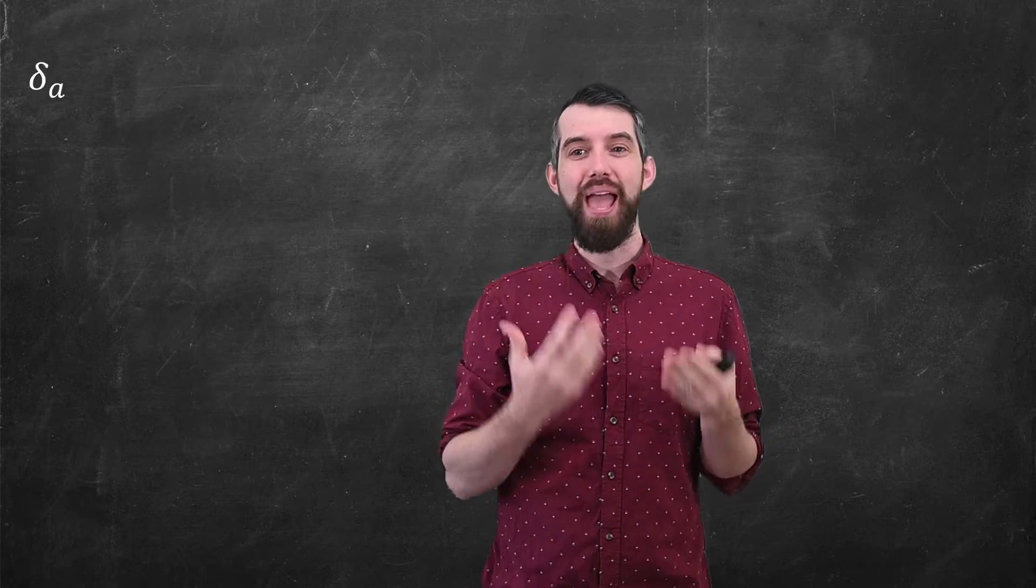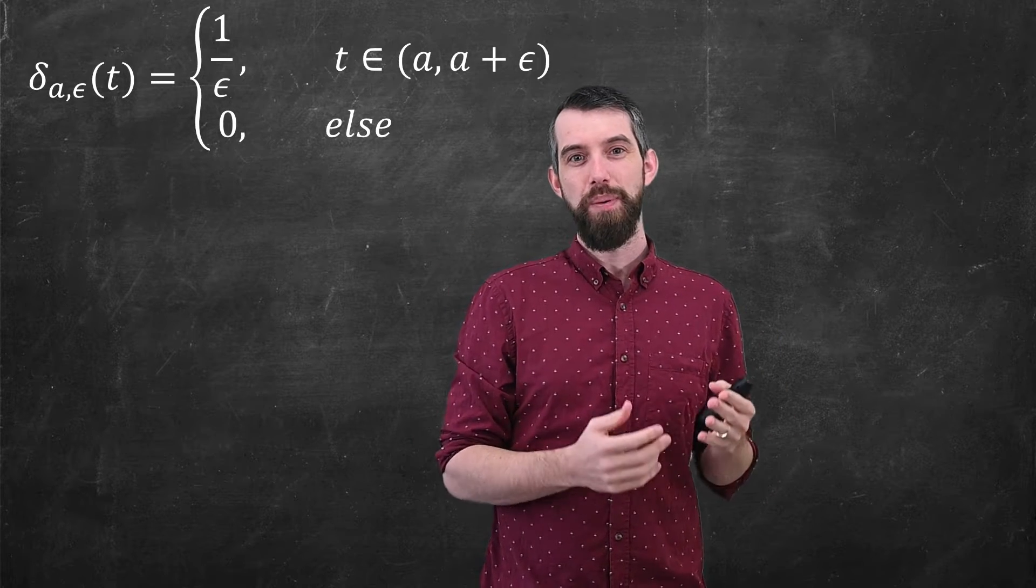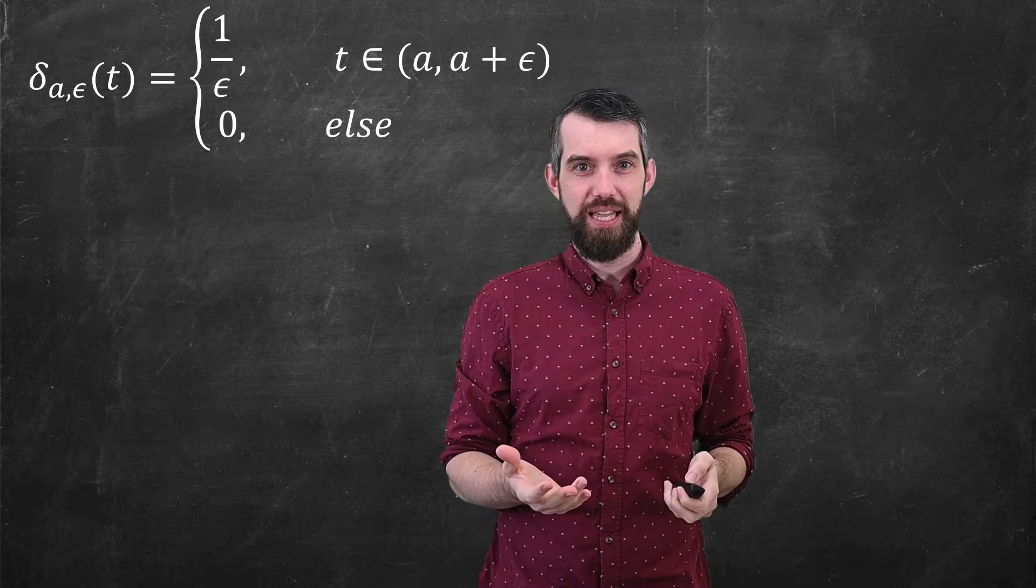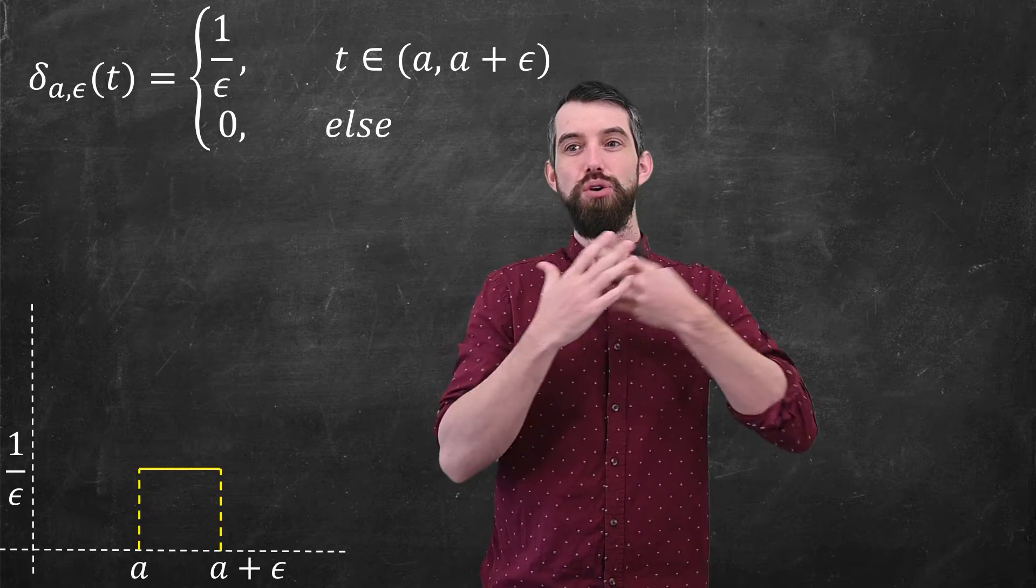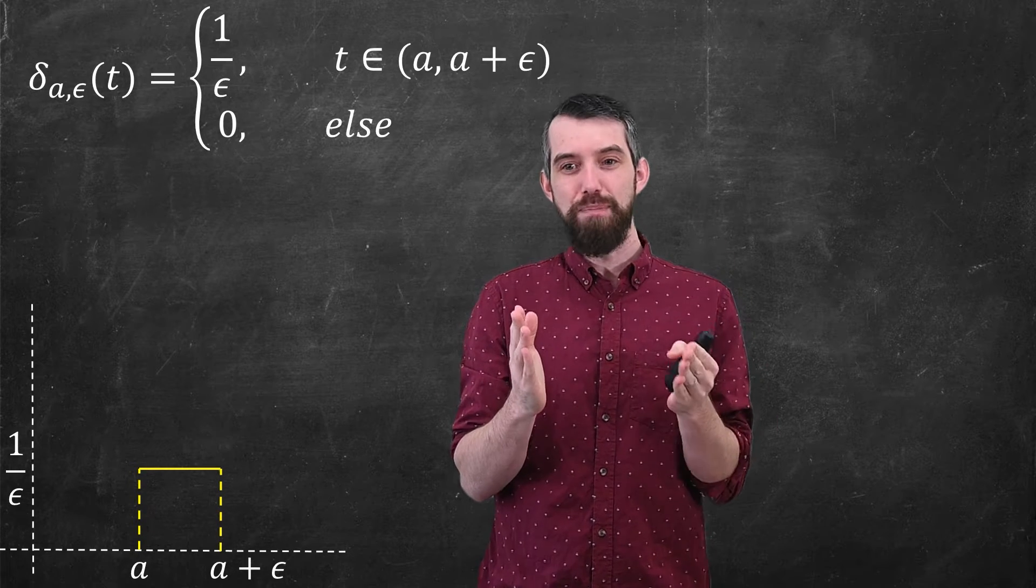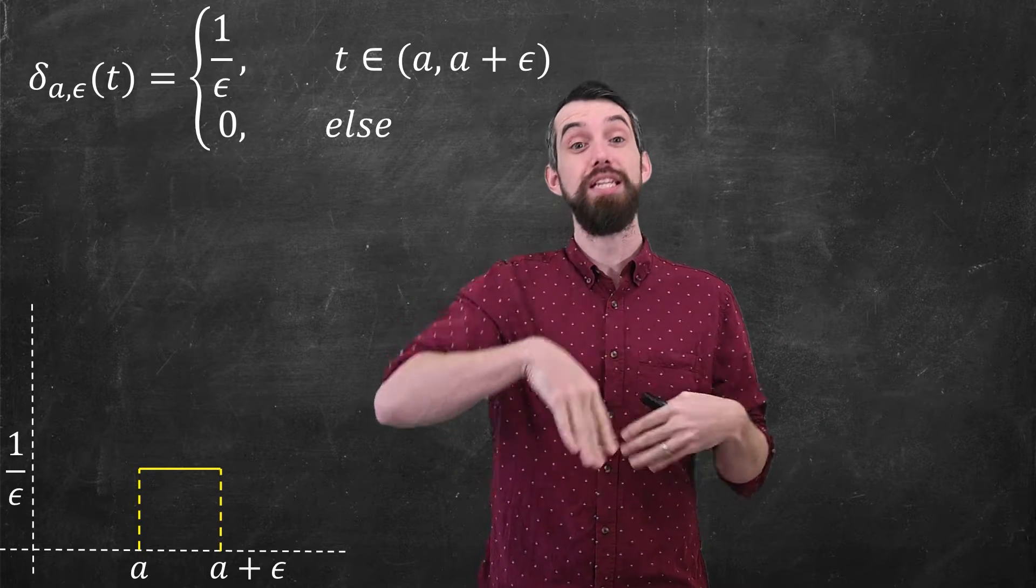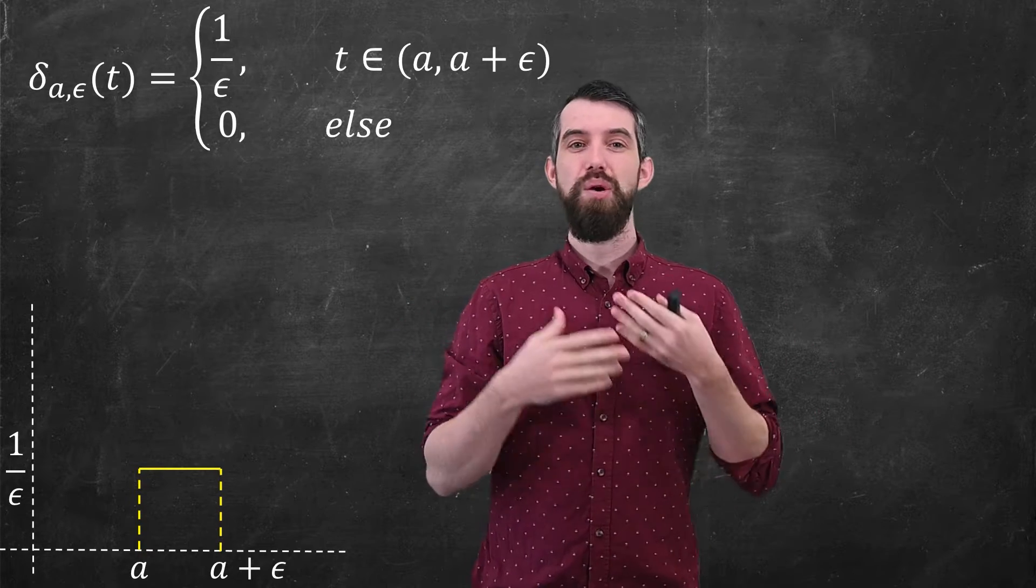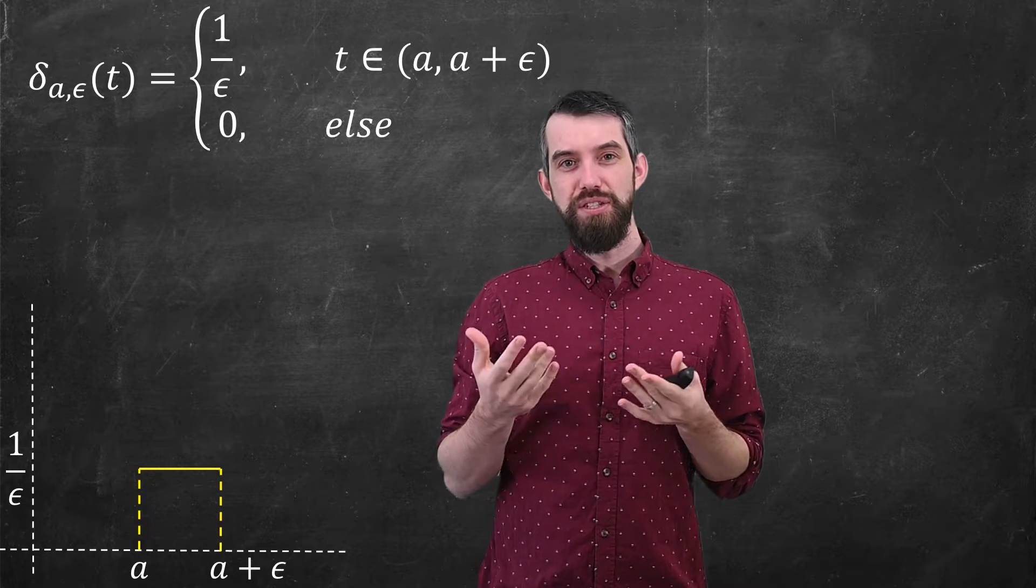I want to begin with something called delta sub a,ε, which is a bit of a weird terminology. But what I mean by this is it has a graph of something that looks like this. It's zero everywhere, except in some interval a to a plus epsilon, and then there the function is just a constant function that has height one over epsilon. Here, I'm imagining epsilon as just some small number.